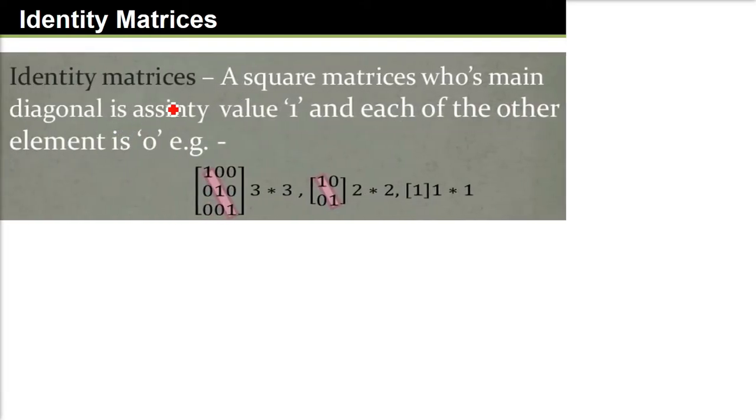Similarly in mathematics, identity means what? Identity matrix is if you take any value multiplied by this identity matrix, the value should come back.